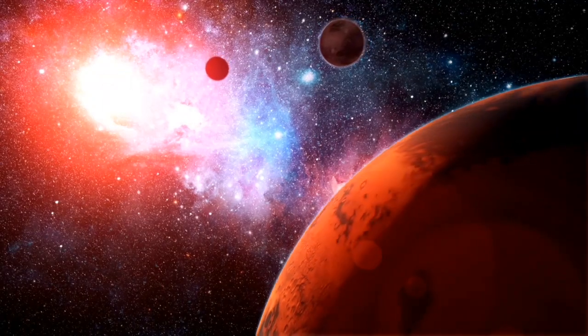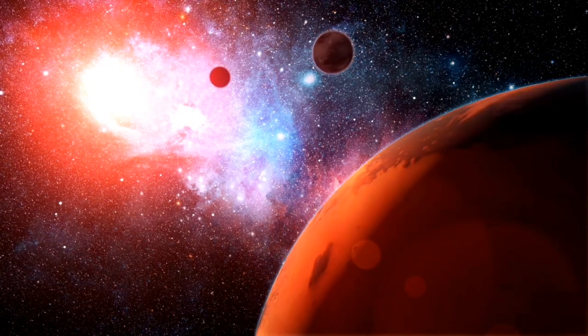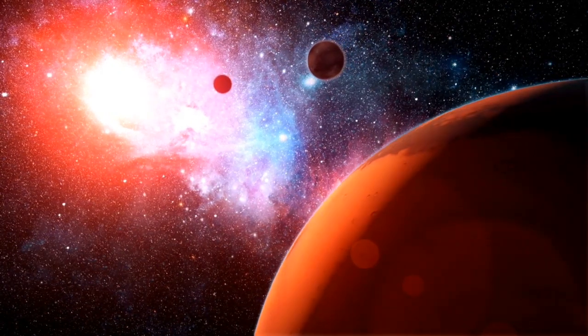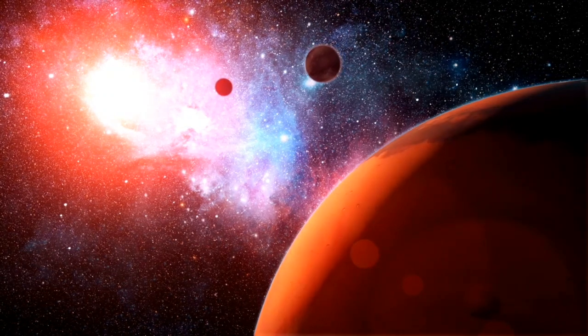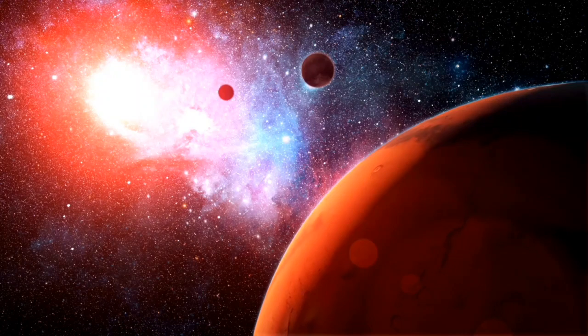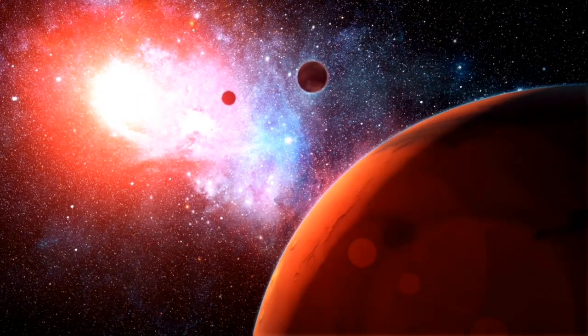For all the excitement surrounding the search for distant exoplanets in recent years, the 4,000-plus planets confirmed so far have been unseen actors on the cosmic stage. Scientists can determine an exoplanet's orbit, radius, mass, and sometimes density but not much else. The planets remain, in the words of one researcher in the field, small black shadows.